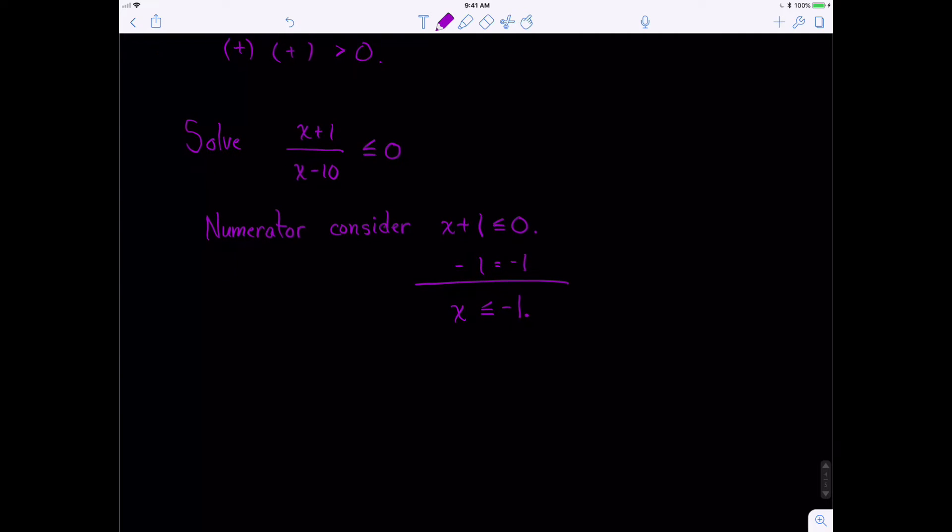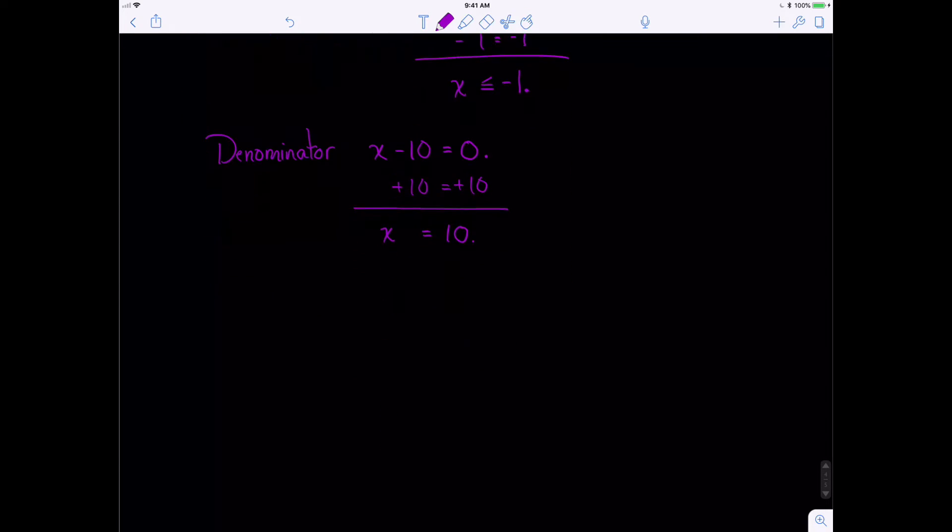So there's part of our, that'll be one of the numbers on our graphical solution. The other one is the denominator. And the denominator is, we're always checking the denominator to 0, because if the denominator equals 0, the problem is undefined. So in this one, we want to add 10 to both sides. And we know that if we get a solution of 10, we know that we can't have a solution of 10.